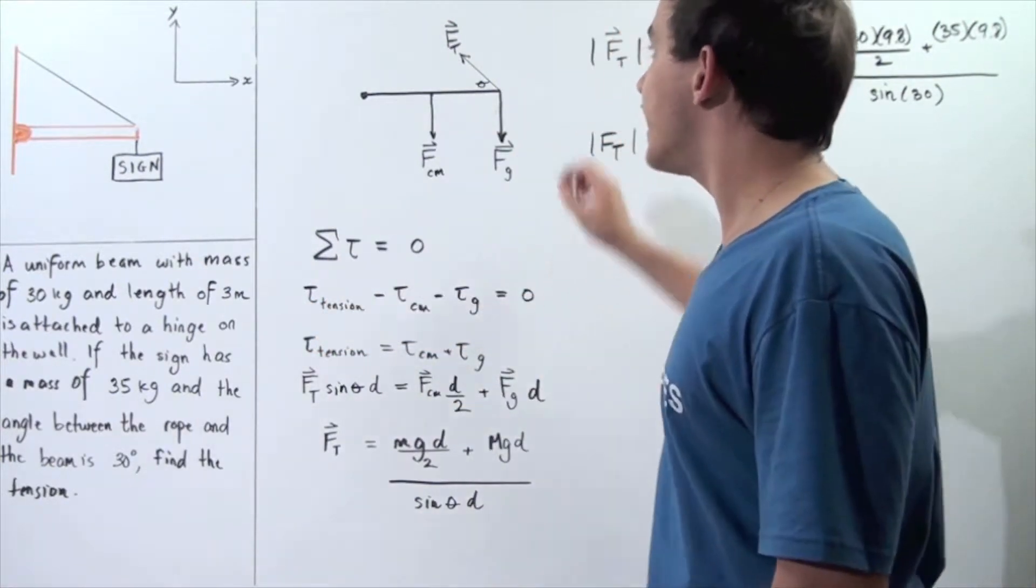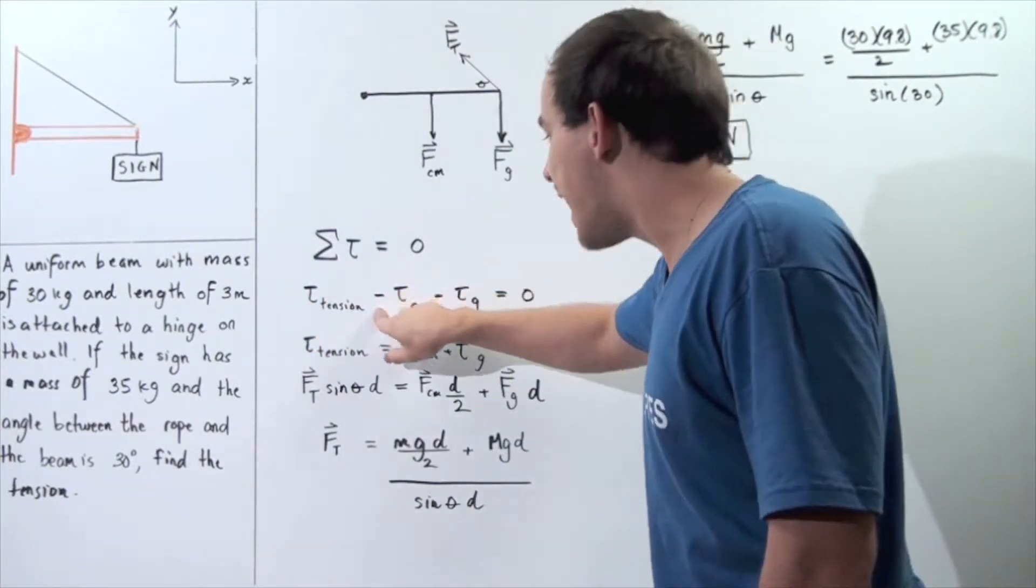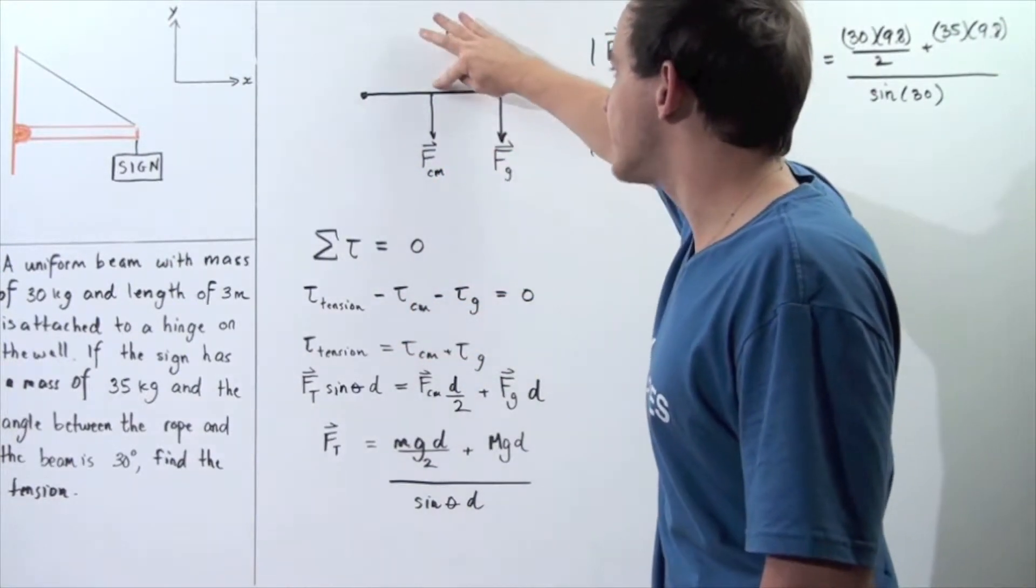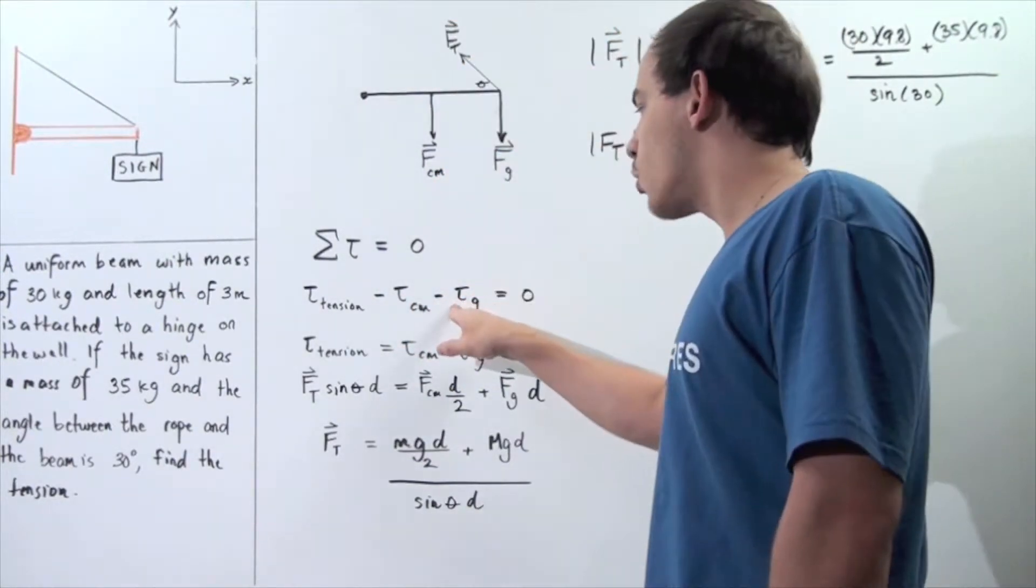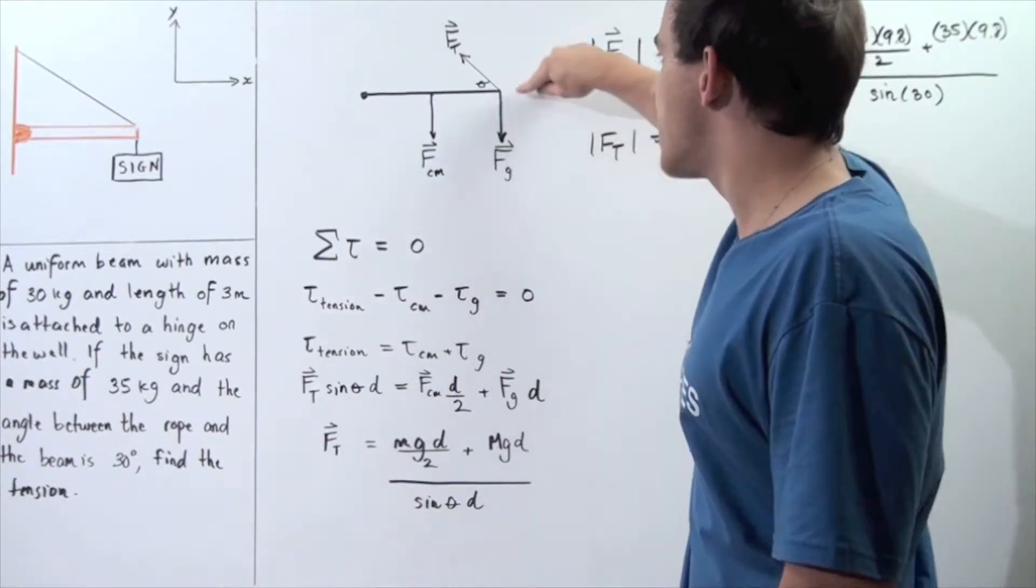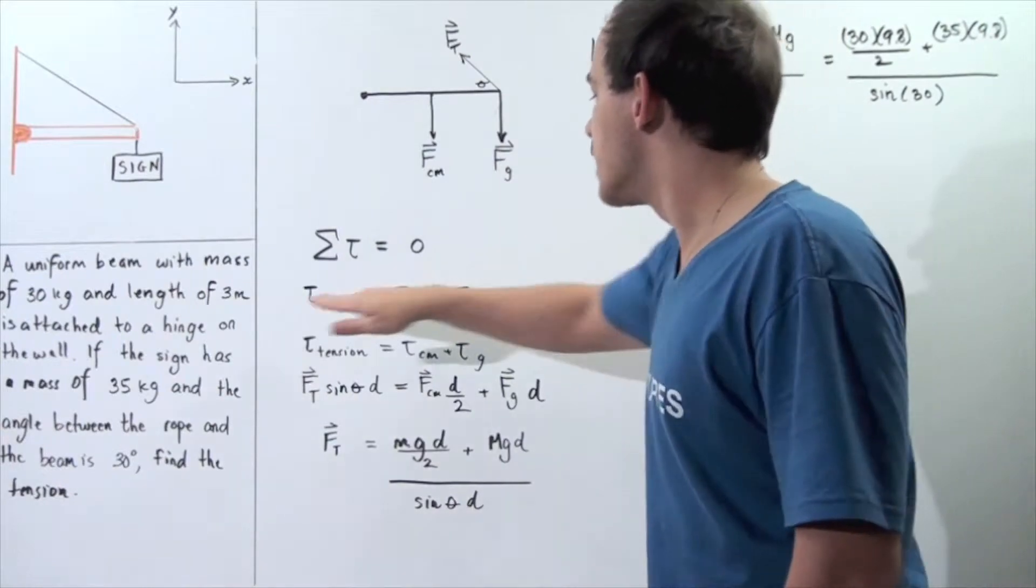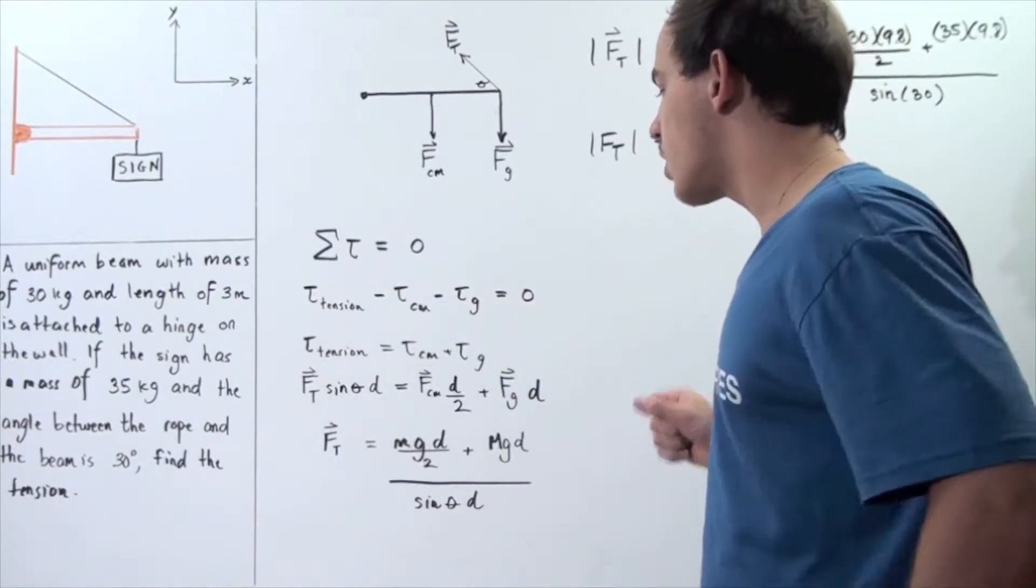Torque created by the tension force minus torque created by the gravitational force that acts at the center of mass minus torque created by the gravitational force that acts on the sign which in turn acts on the beam. So we have the following sum is equal to zero.